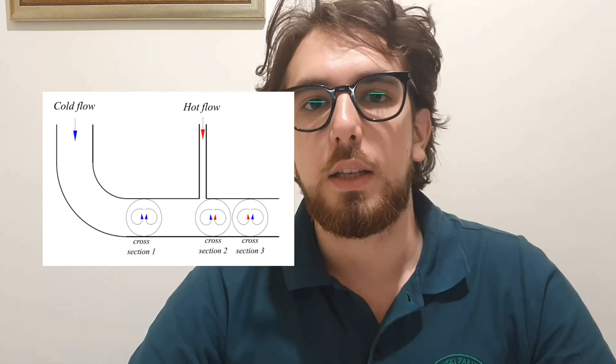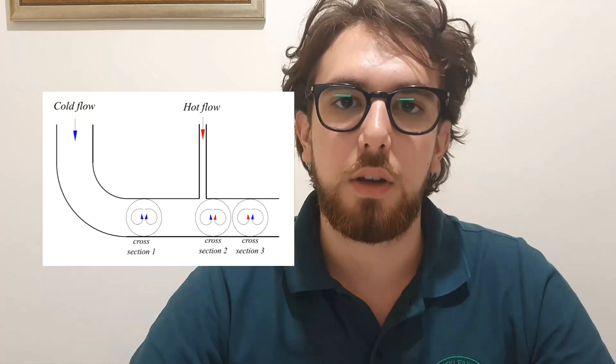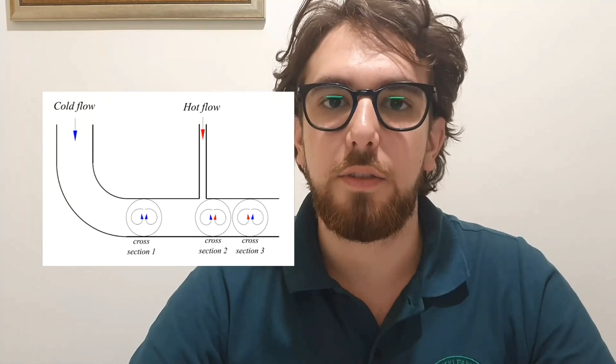This pressure gradient creates dean vortex swirl switching, which causes uneven mixing of the cold and hot flows, which creates fluctuating thermal stresses that can lead to catastrophic failure via high cycle thermal fatigue. This is especially dangerous since the failure of a cooling system can lead to a meltdown.